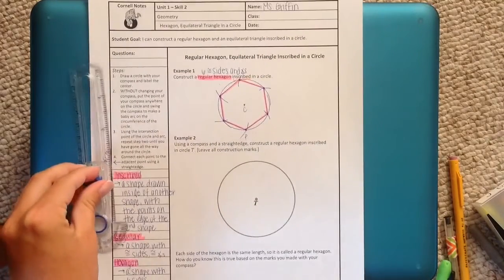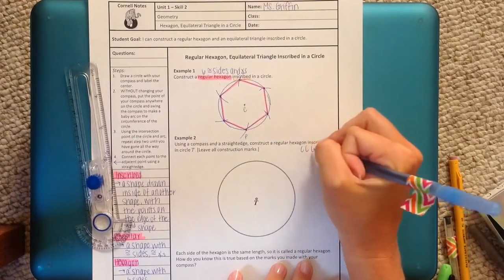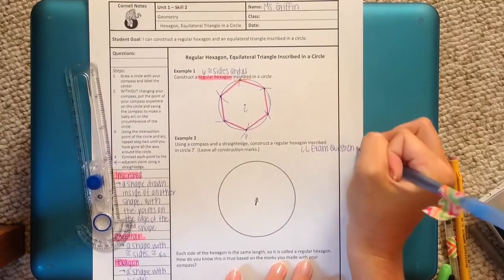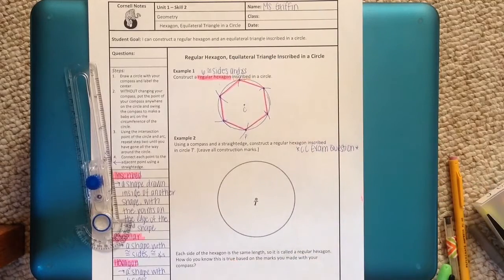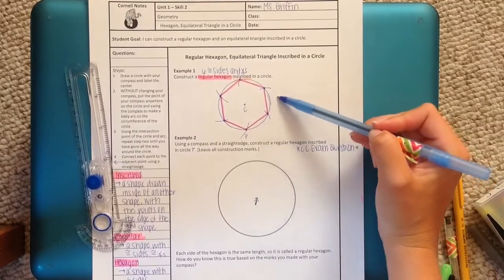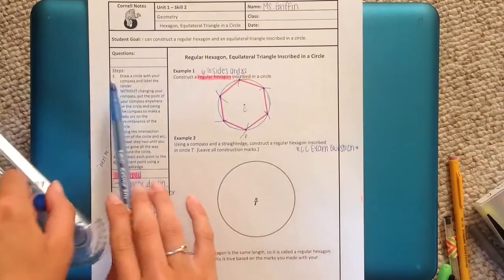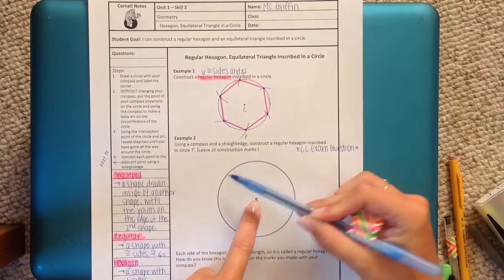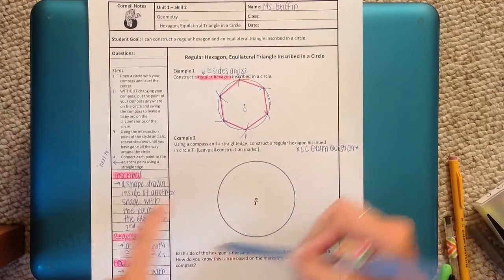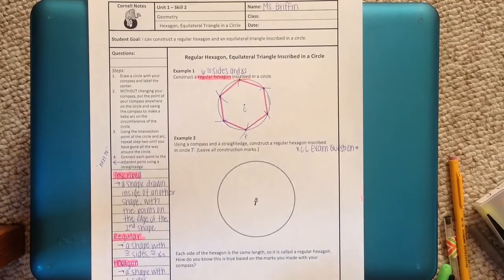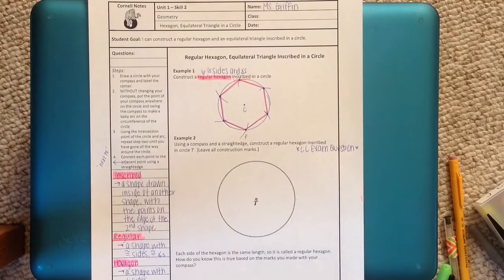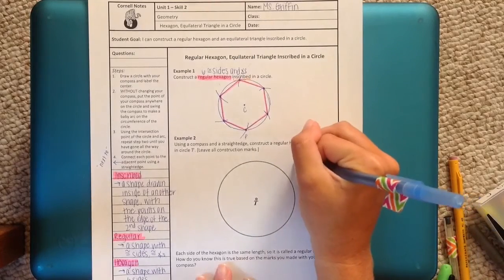Now example two came straight from a Common Core exam. It says use a compass and a straight edge, construct a regular hexagon inscribed in circle T. Now the difference here is that they gave a circle with a center, unlike in example one. That means you get to skip step one, sort of. But you need to know what the length of the radius is, from the center to the outside, anywhere, before you start making arcs. Because if you just choose whatever radius you want to make the arcs, then you could end up with just four arcs around the circle, or ten arcs around the circle, depending on how large or how small you made your radius.